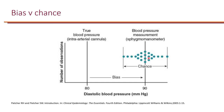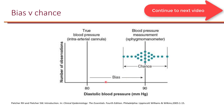Now, let's say we were able to measure the true blood pressure using an intra-arterial cannula, and this happens to be 80. This deviation from 80 — so if the average of these measurements using the sphygmomanometer was 90 — this deviation from the truth is due to bias. So in clinical trials, while there is little that can be done to prevent error due to chance, we want to make sure that we take measures to reduce the amount of bias.